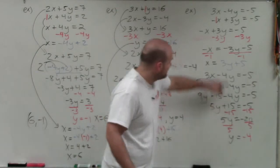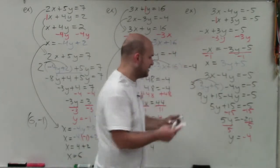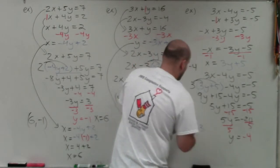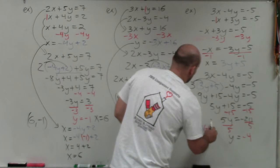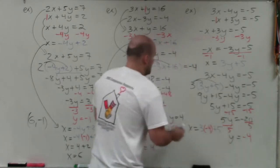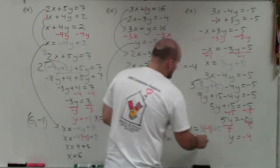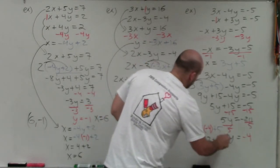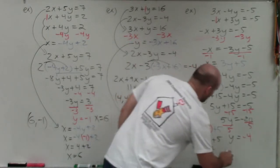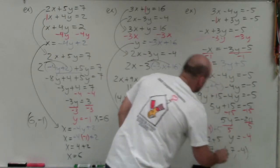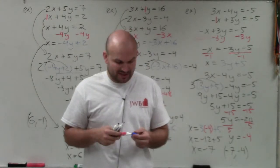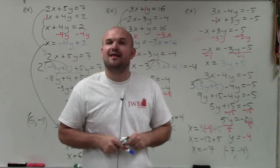Now I know y equals negative 4, so I plug that into x equals 3y plus 5. x equals 3 times negative 4 plus 5. Negative 12 plus 5 is negative 7, so x equals negative 7. The coordinate point solution is (−7, −4), or equivalently x equals negative 7 and y equals negative 4. That is how you solve a system of equations using substitution.